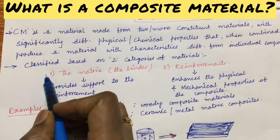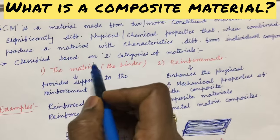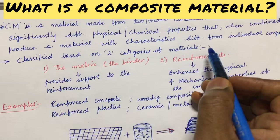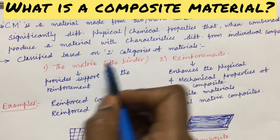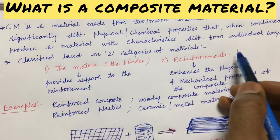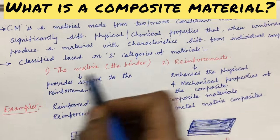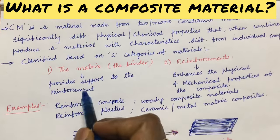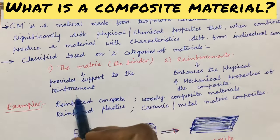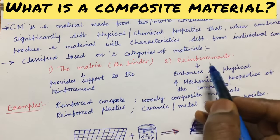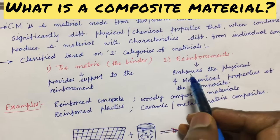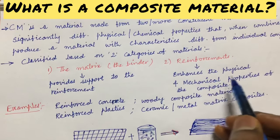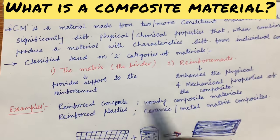Composite materials are classified based on two categories: the matrix and the reinforcement. The matrix is a binder material that provides support to the reinforcement, whereas the reinforcement enhances the physical and mechanical properties of the composite.